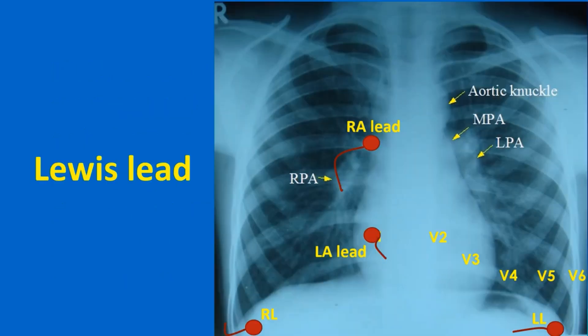Lewis lead is a modified lead one in which the right arm electrode is placed in the second right intercostal space close to the sternum, and the left arm lead is placed in the fourth right intercostal space close to the sternum, i.e. the V1 position.